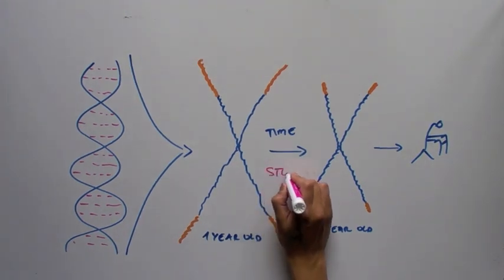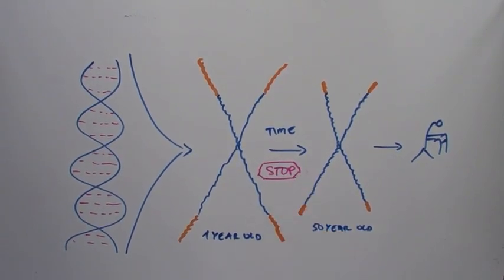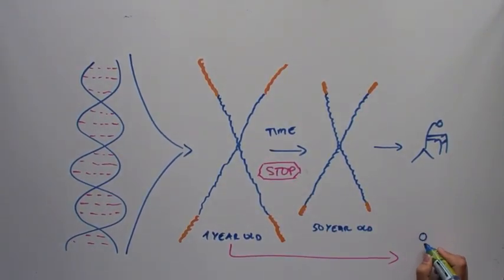From these facts, one could assume that if we could prevent chromosomes from getting too short, we could prevent aging and maybe increase lifespan.